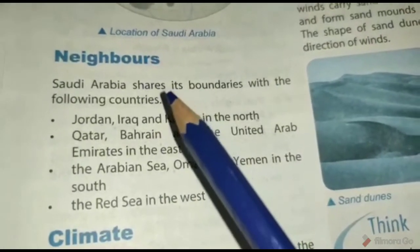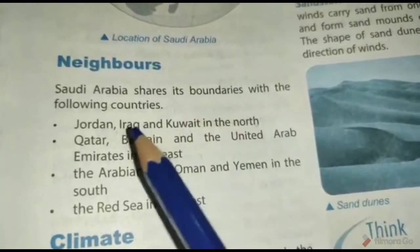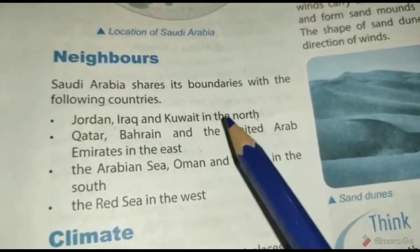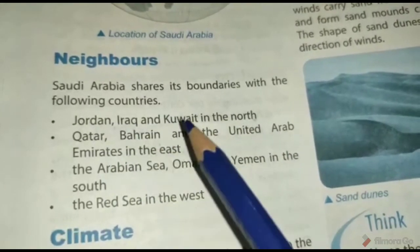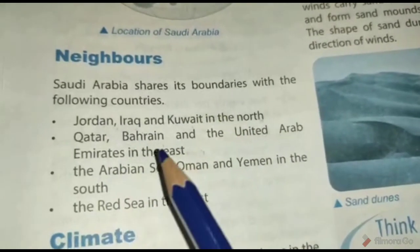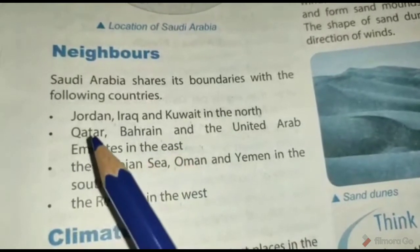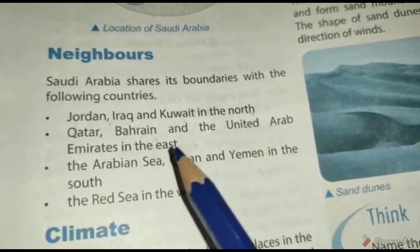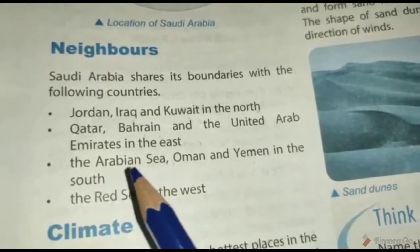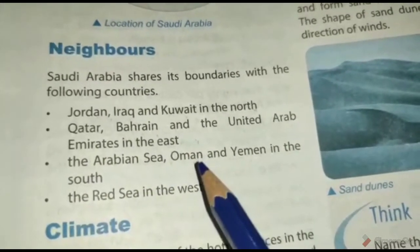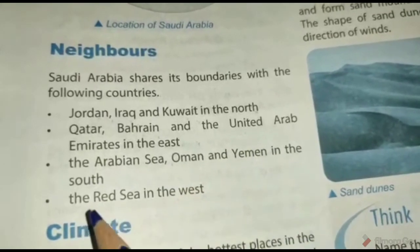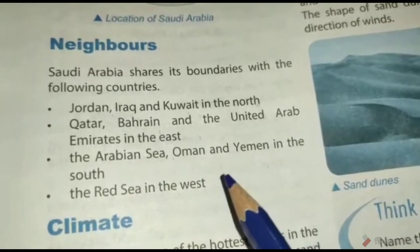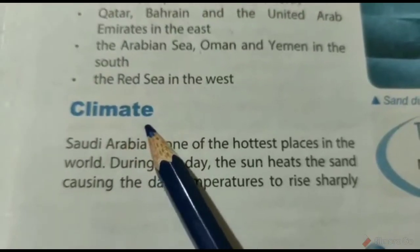Saudi Arabia अपने boundaries को इन देशों के साथ share करता है। North में Jordan, Iraq और Kuwait के साथ। East में Qatar, Bahrain और United Arab Emirates के साथ। South में Arabian Sea, Oman और Yemen के साथ। West में Red Sea के साथ अपनी boundaries share करता है। Our next topic is Climate.